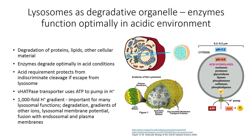The pH inside lysosomes is primarily controlled through the actions of the vesicular hydrogen ATPase pump, which uses the energy of ATP to concentrate hydrogen ions in the lysosomal lumen. These ions are concentrated in a hundred to a thousand fold gradient across the membrane, and this concentration is used for a variety of functions, including degradation by acid-loving enzymes, maintaining gradients for other ions, the membrane potential, and contributions to fusion with endosomal and plasma membranes.